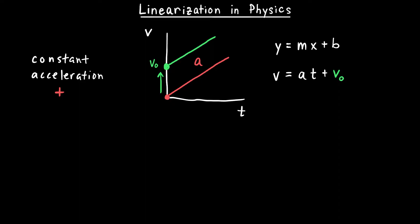Rearranging gives v = v-naught + at, which is one of the kinematic equations used to solve problems in physics. This connects what we see in the graph to the equation of a line, revealing what the slope and y-intercept represent. In a more difficult case, this approach allows us to create an equation describing the physical situation.